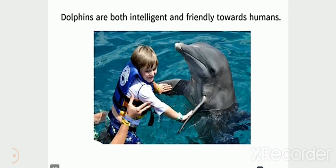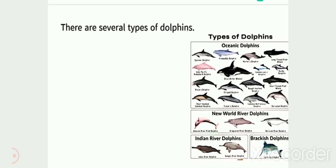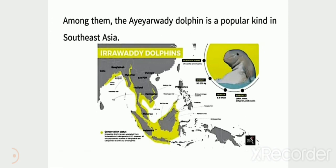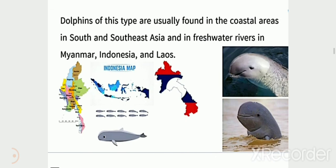Dolphins are both intelligent and friendly toward humans. There are several types of dolphins. Among them, the Irrawaddy dolphin is a popular kind in Southeast Asia. Dolphins of this type are usually found in the coastal areas in Southeast Asia.